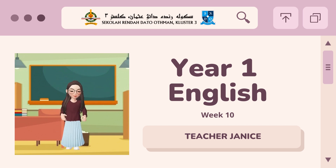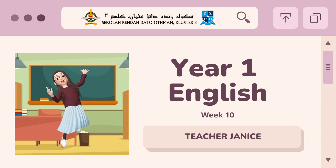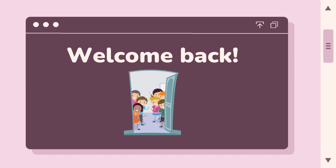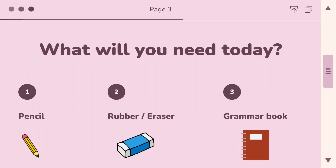Good morning, Year 1. It is week 10 of your English class. Let's first welcome you back — welcome back, Year 1A and Year 1B. What day is it today? It is Wednesday, the 9th of March 2022. Remember that date! What you're going to need today is your pencil, rubber or eraser, and your grammar book.